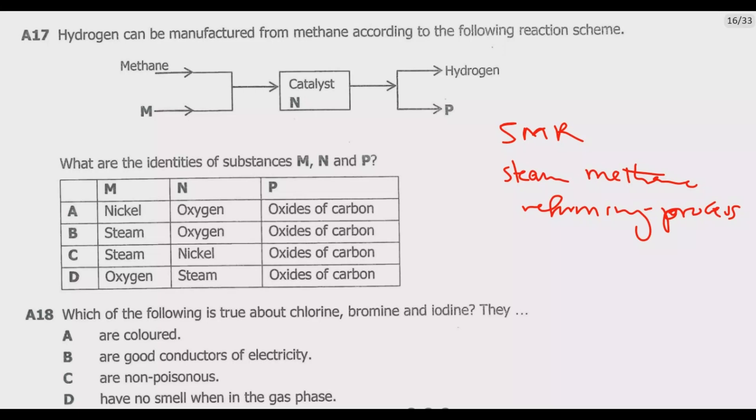What is involved in this process? The primary component of natural gas is methane. Methane is combined with steam, that's why it's called the steam methane reforming process. So this M is steam.